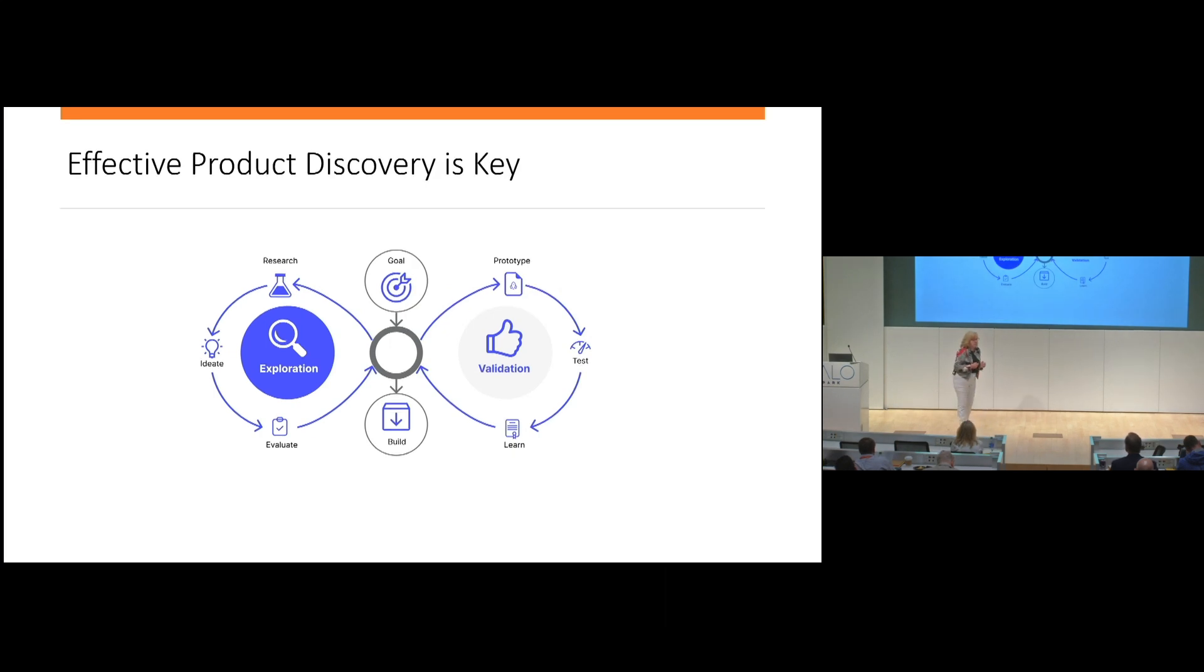How do we validate that product market fit before we expend precious engineering cycles on major development projects? This is where effective product discovery comes in. More sophisticated companies go through an exploration phase where they're doing market research, ideating, evaluating solutions, prototyping, testing with their user base, learning, and iterating. This is a key tenant of Agile, but most companies can't do this effectively.